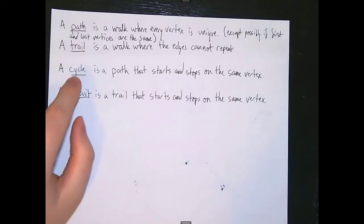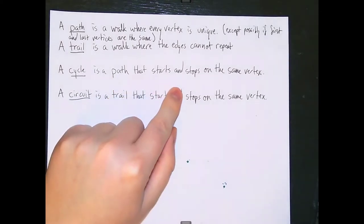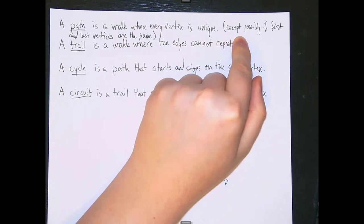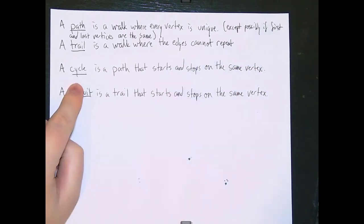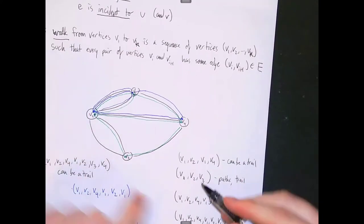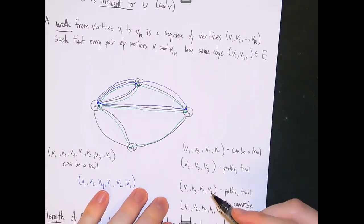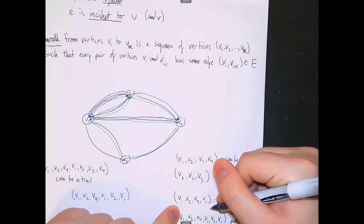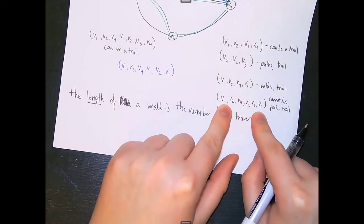Our next definition is a cycle. A cycle is specifically a type of path, but it's a path that starts and stops on the same vertex. That's why paths have the exception that the first and last vertices may be the same. So a cycle is a path where the first and last vertices are the same, but every other vertex is unique. V₁, V₂, V₃ is a path that is not a cycle — it starts at V₁ and stops at V₃. V₁, V₂, V₄, V₁ is a cycle because it starts at V₁, stops at V₁, and no vertices are repeated in between.